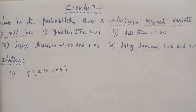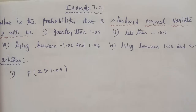Hi students, I am Gopinath. I need to solve the Business Maths exam problem 7.21. The given question: what is the probability that a standard normal variate Z will be — subdivision 1: greater than 1.09; subdivision 2: less than minus 1.65; subdivision 3: lying between minus 1.00 and 1.96; subdivision 4: lying between 1.25 and 2.75.